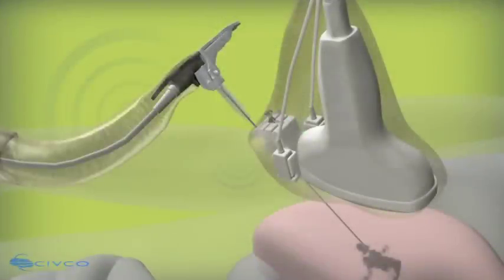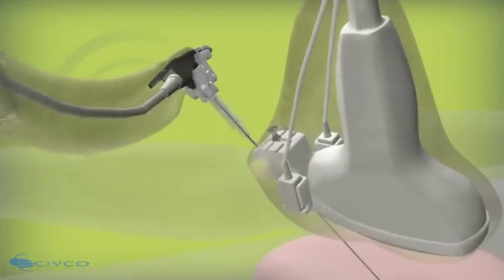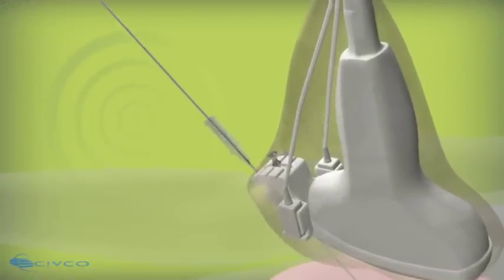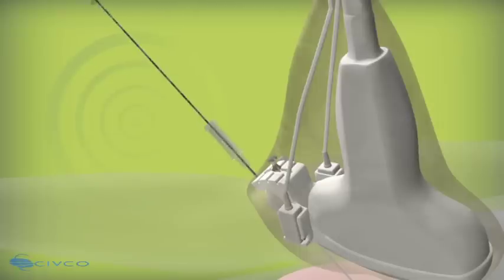After reaching desired target, rotate the needle out of the sheath hub by turning counterclockwise, leaving the sheath in place. Treatment is ready to begin.